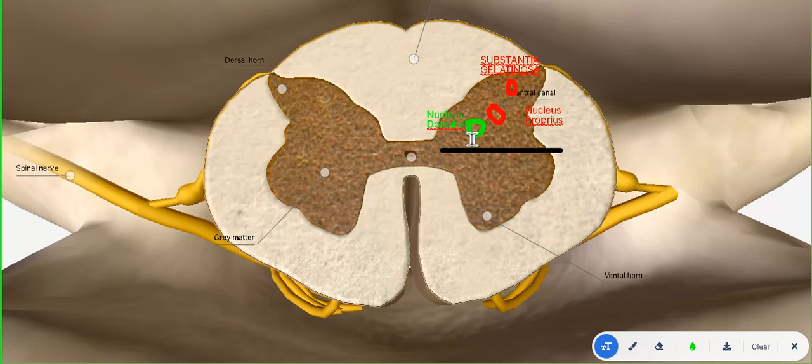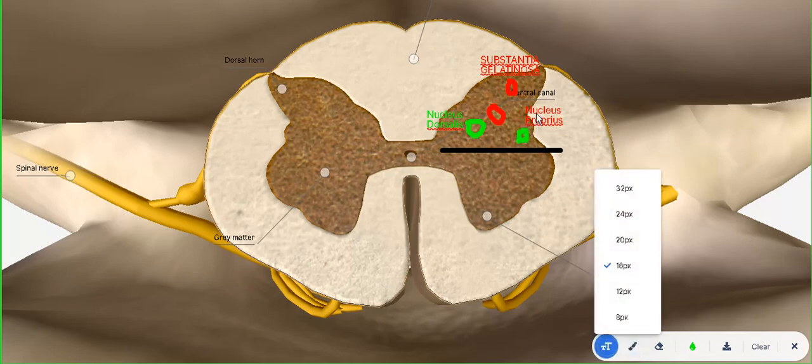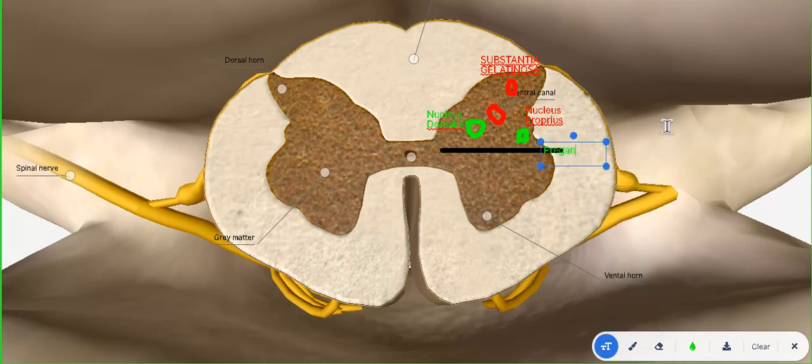So when you think of the nucleus dorsalis or Clark's column, think cerebellum. And once again, it's only present in the thoracolumbar region. The other two up above are present throughout. The other nucleus which is present only in the thoracolumbar region has a long name, but it will be present in the lateral horn. And I forgot to mention, the lateral horn itself is only present in the thoracolumbar region. Why? Because of the presence of this nucleus. This nucleus is known as the preganglionic sympathetic outflow.